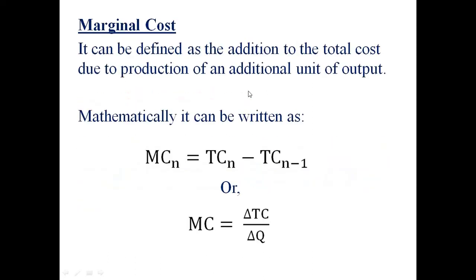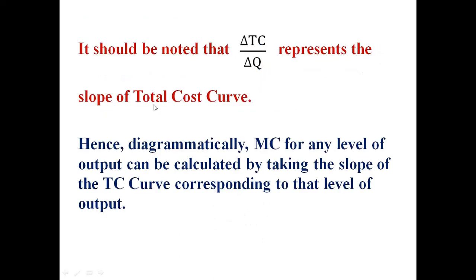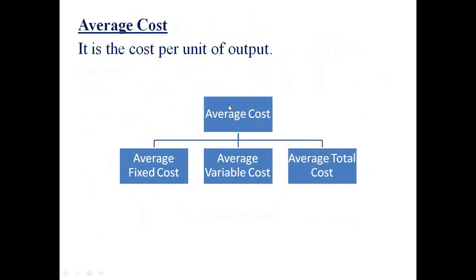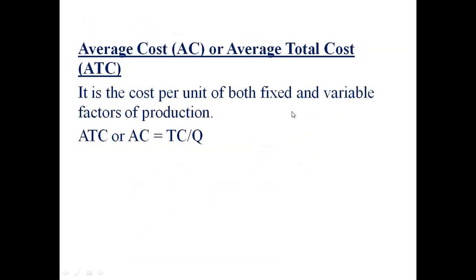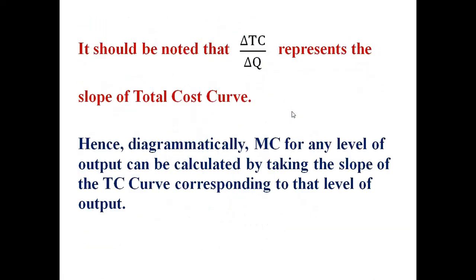Change in total cost divided by change in quantity represents the slope of the total cost curve. The total cost curve is inverted S-shaped. So diagrammatically, you can find MC for any level of output by taking the slope of the TC curve at the corresponding level of output.